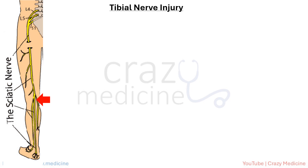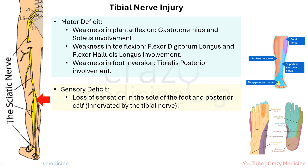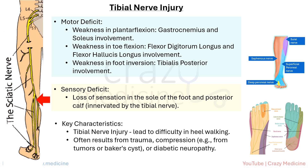Finally, tibial nerve involvement, which is relatively rare in isolation. Motor deficits typically involve weakness in plantar flexion due to gastrocnemius and soleus involvement, weakness in toe flexion due to flexor digitorum longus and flexor hallucis longus, and weakness in foot inversion due to tibialis posterior involvement. Sensory deficit presents as loss of sensation over the sole of the foot and posterior calf. A key feature is difficulty with heel walking. This injury results from trauma, compression, or pathology involving the popliteal fossa — such as tumors or Baker's cyst.